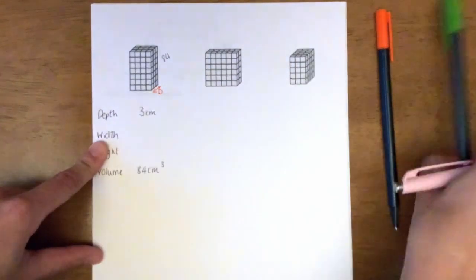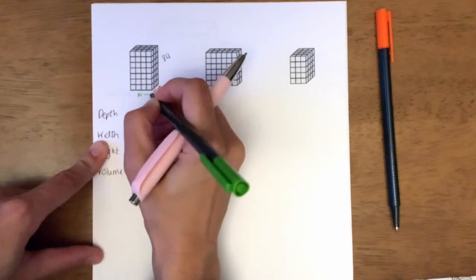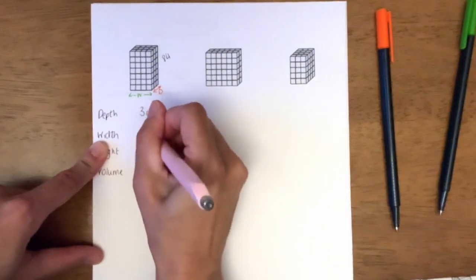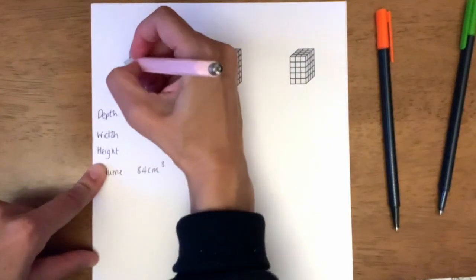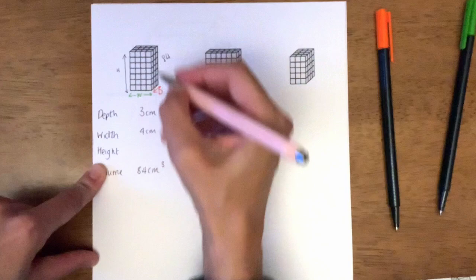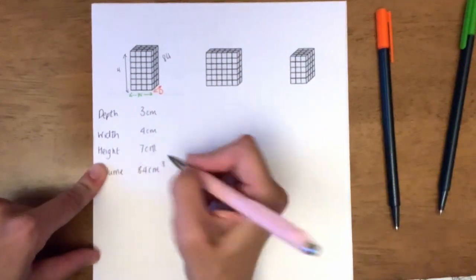The width is this here - it's four across. And then we've got the height, which is this one. The height is seven, seven centimeters.